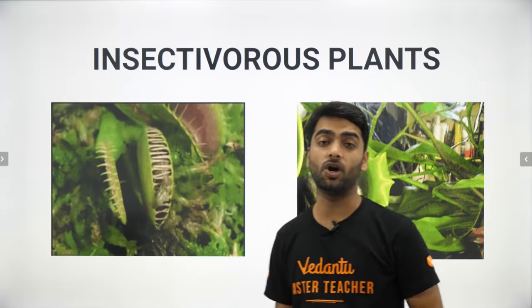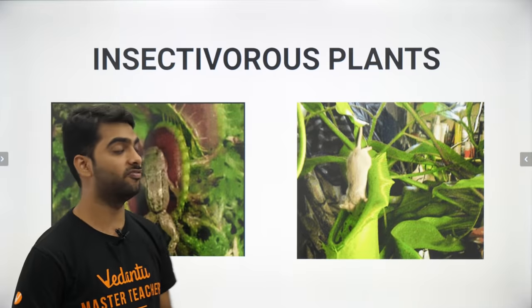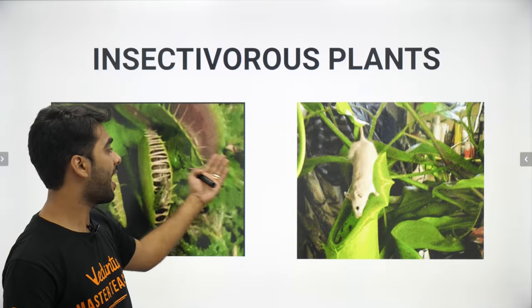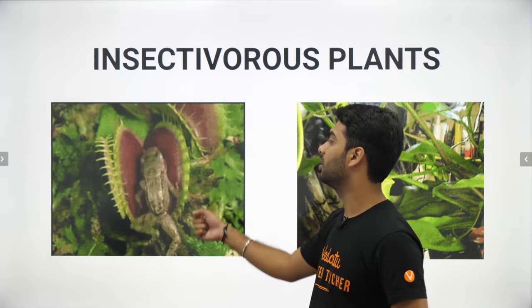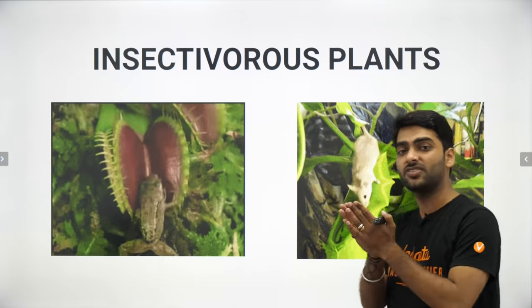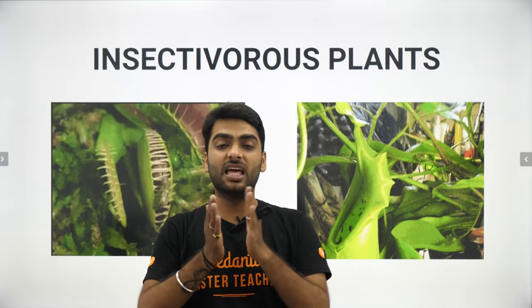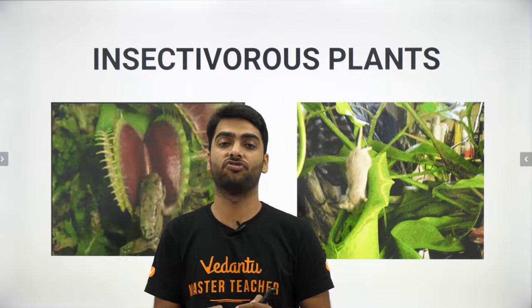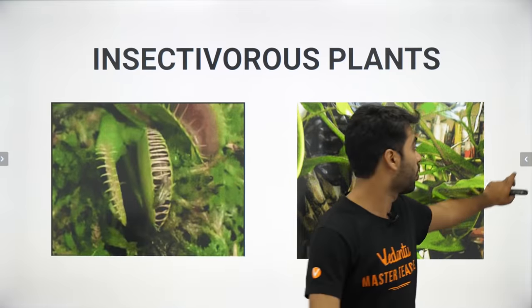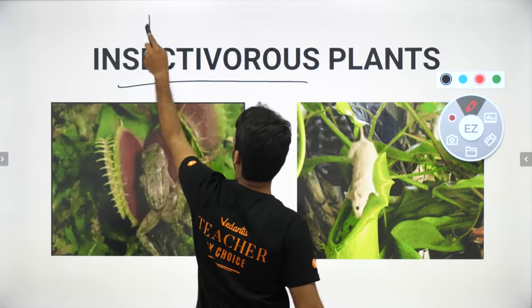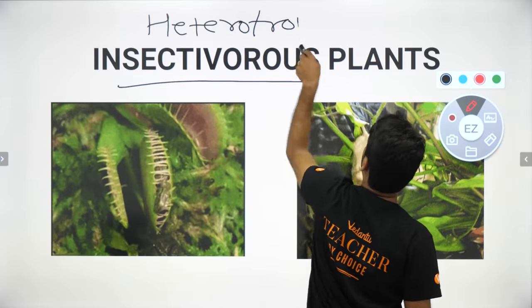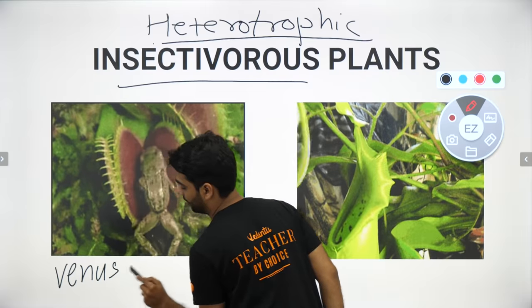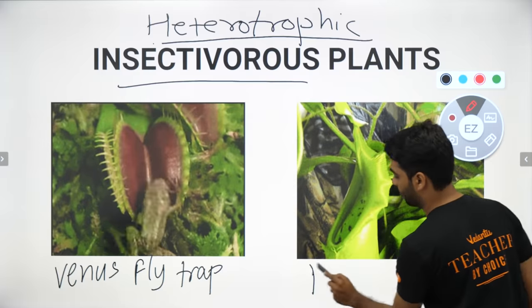Now let us move on to heterotrophic nutrition, where plants depend on other organisms to fulfill their nutritional needs. We have the Venus flytrap and the pitcher plant. When a frog or mouse enters these plants, the plant closes, and due to the chemicals present inside, the bodies of these animals dissolve and the plant absorbs nutrients from them. These are insectivorous plants practising heterotrophic nutrition.